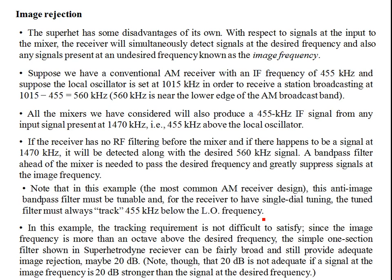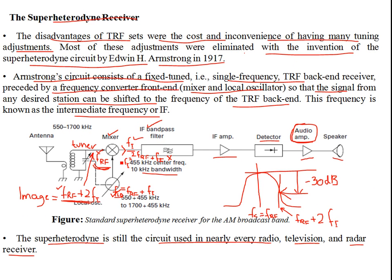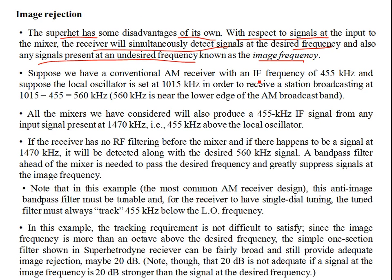The disadvantage of the superheterodyne receiver is that the input to the mixer means the receiver will simultaneously detect signals at the desired frequency and also any signal present at the image frequency. The mixer is going to produce some difference. We are not interested in the higher frequency — the difference is the same, which is 455 kilohertz if you're considering the AM receiver.